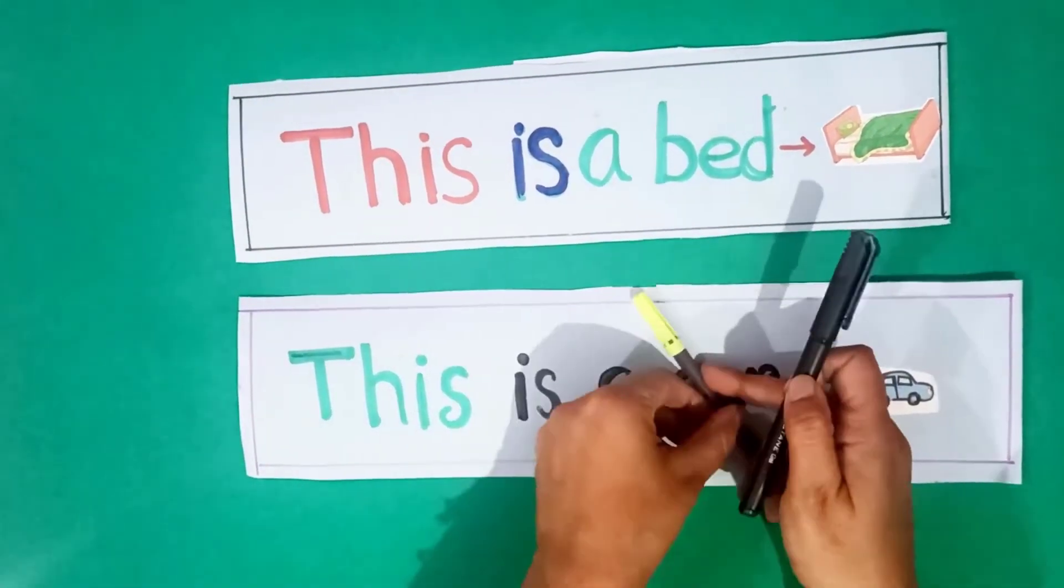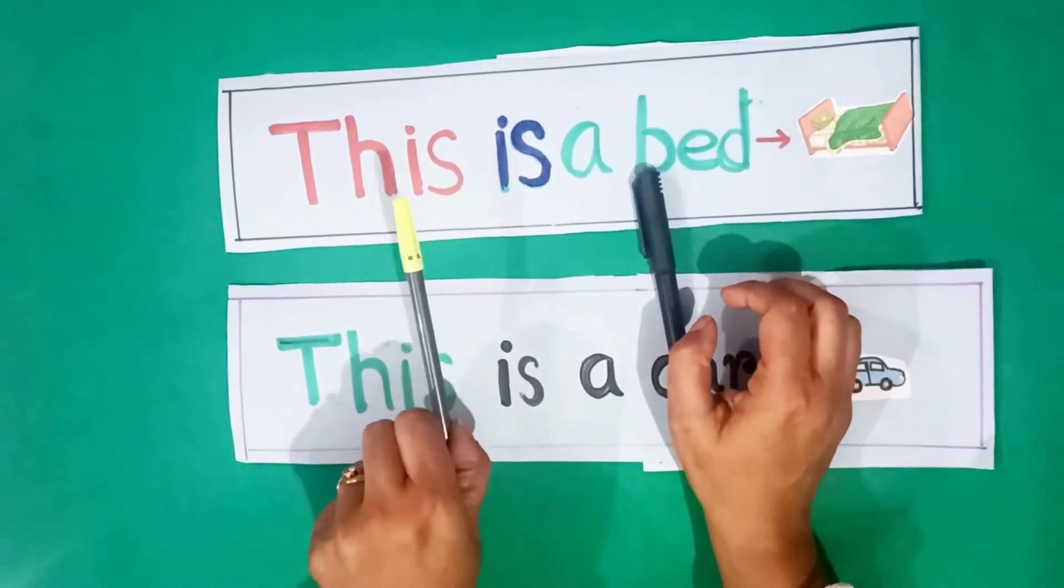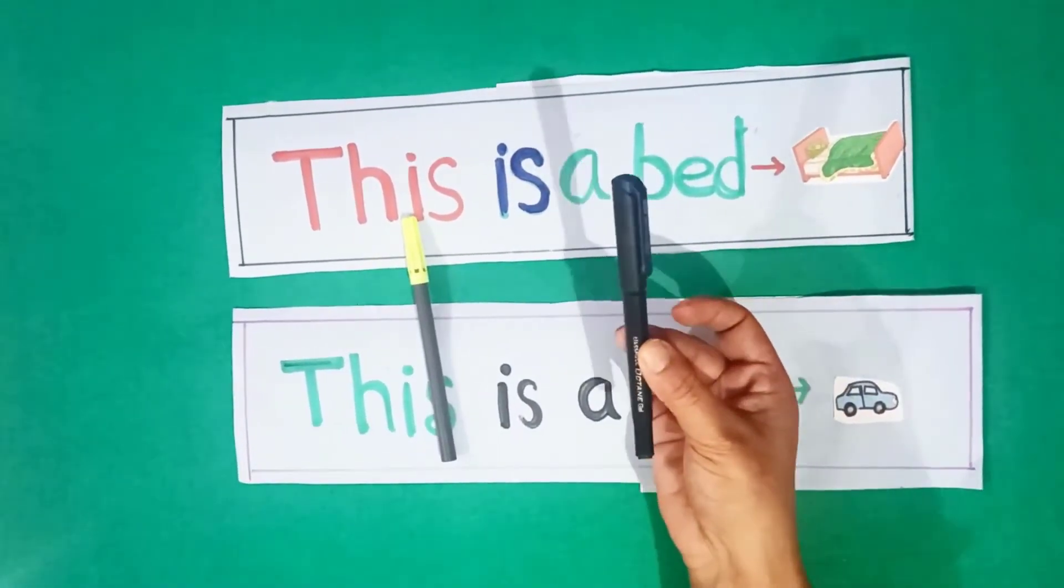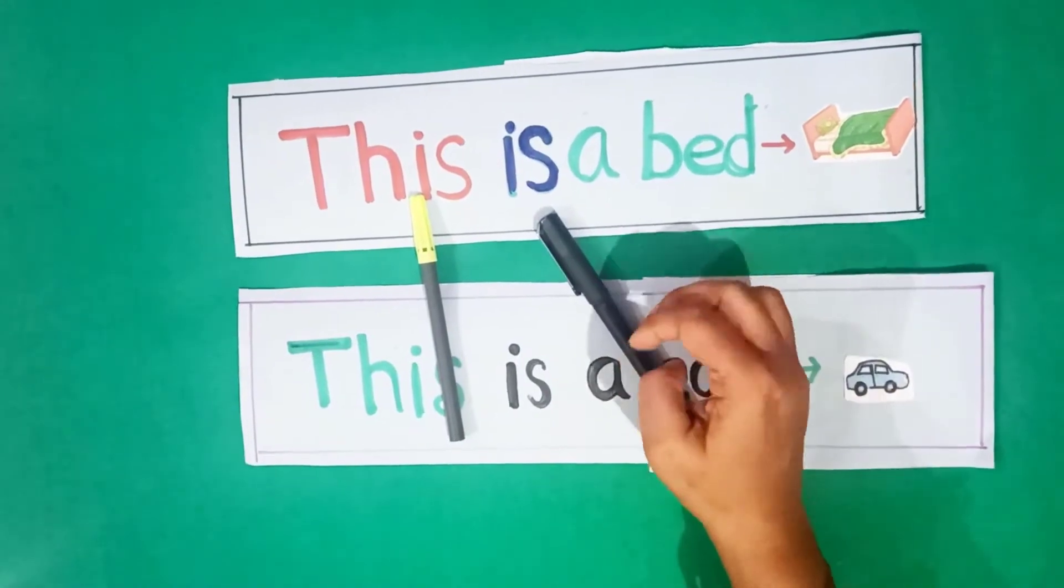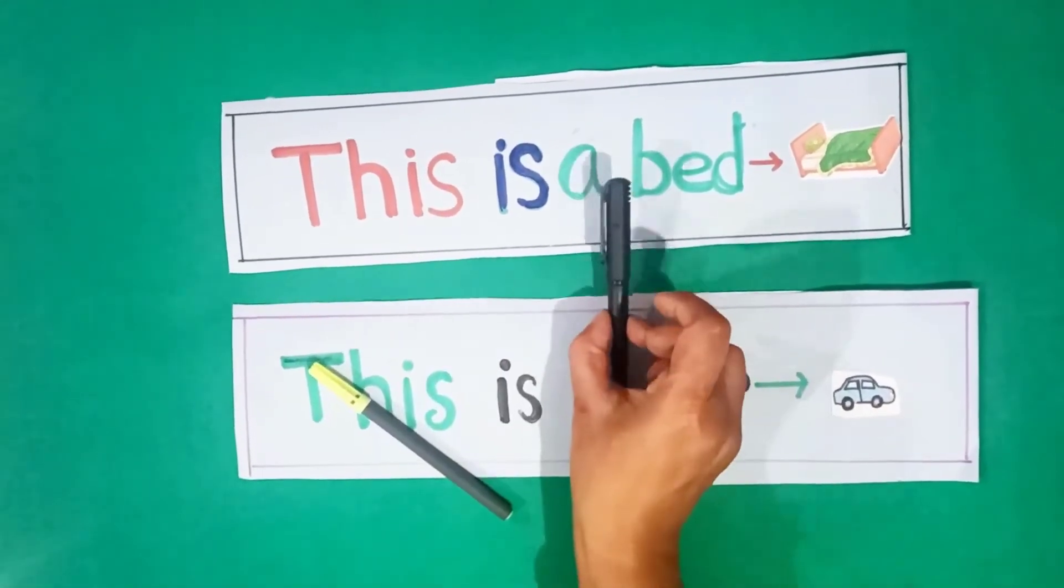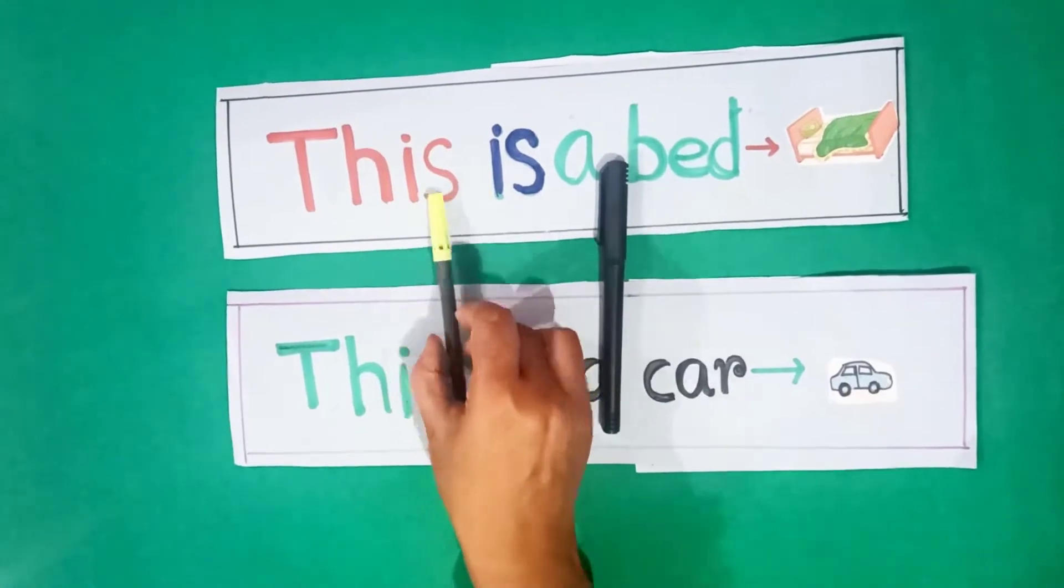See, two things are there. One is pen, another one is sketch pen. When the things are near to you, that time we use this. Like this is a pen, this is a sketch pen.